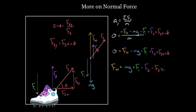That makes sense because if we pull up, we know we're reducing some of the pressure. We'll reduce the normal force. This component points up, relieving some of the pressure on the bottom of the shoe, so the normal force goes down and we subtract F3 sine phi.